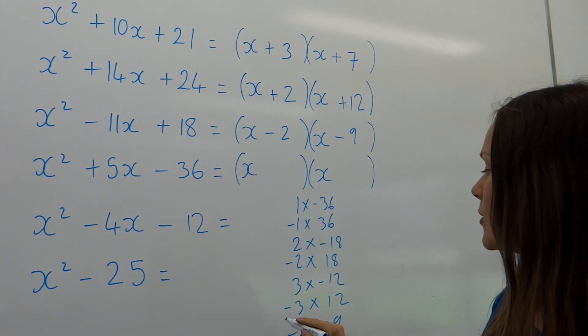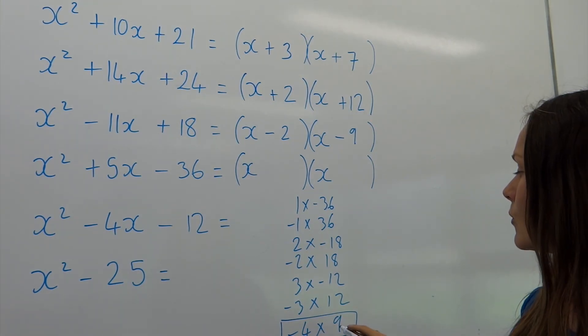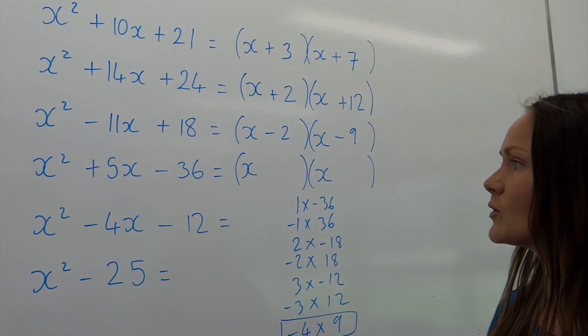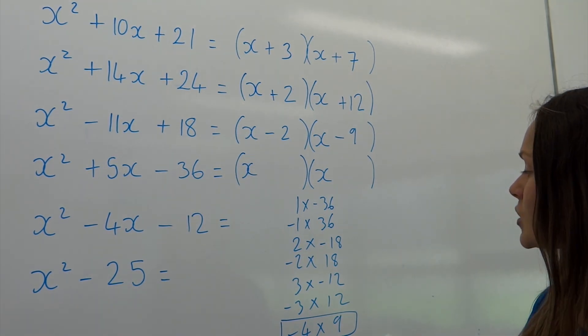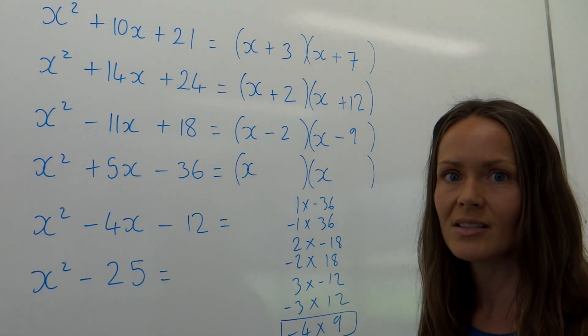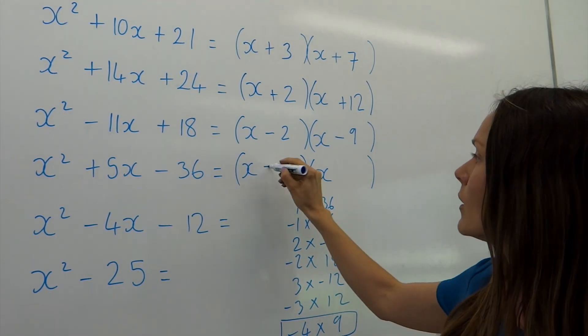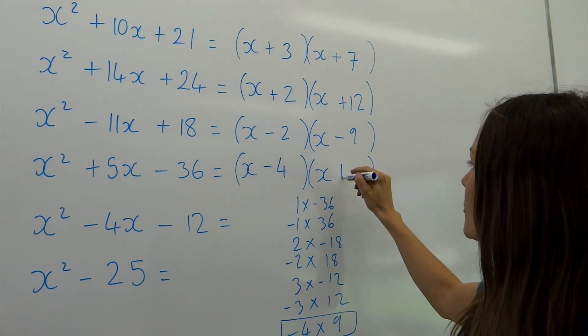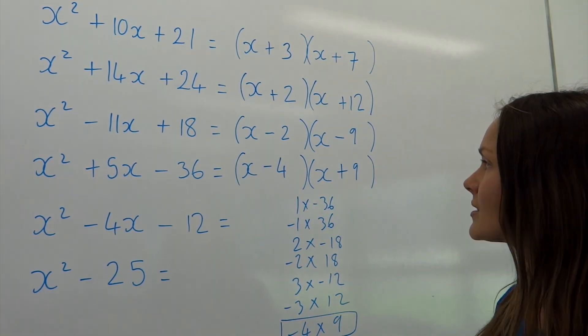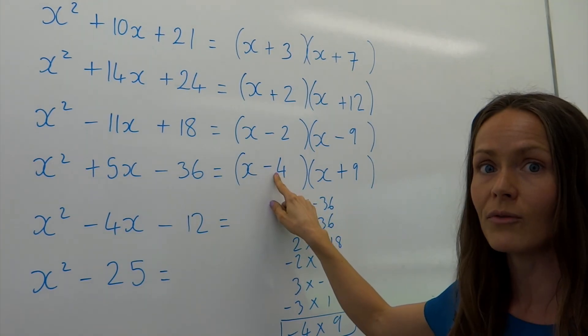So which pair add to give 5? Just to save a bit of time, I know it's this one. If I add minus 4 and positive 9 together, it gives me positive 5. So these are my numbers. So just be careful when you put the numbers in this time, because the 4 must be negative. So you have to put x minus 4, and this 9 is positive, so you have to put plus 9. So the signs are important. This minus has to be with the 4 value.